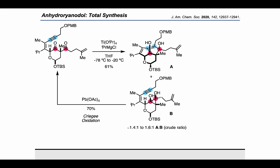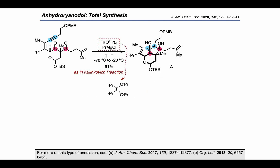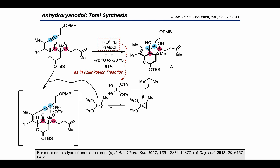Going into this mechanism in more detail, it works in a manner similar to the Kulinkovich reaction, where a double Grignard addition to the titanium occurs, after which propane is extruded through a beta-hydride elimination. By the equilibrium shown, this can lead to the formation of a titanacyclopropene on the starting material, which can be used as a 1,2-dicarbanion equivalent, as in the Kulinkovich reaction.